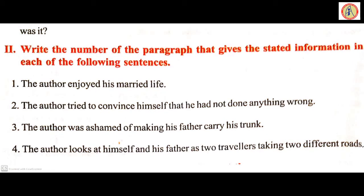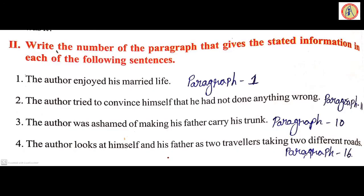Next, for the second roman, write the number of the paragraph that gives the stated information in each of the following sentences. Four sentences are given. You should write from which paragraph each sentence was taken. First sentence: 'The author enjoyed his married life' — this was taken from paragraph 1. Second: 'The author tried to convince himself that he had not done anything wrong' — paragraph 11. Third: 'The author was ashamed of making his father carry his trunk' — tenth paragraph. Fourth: 'The author looks at himself and his father as two travelers taking two different rules' — the last paragraph, paragraph 16.